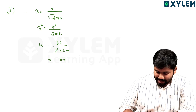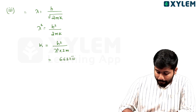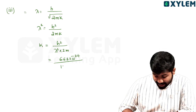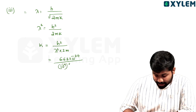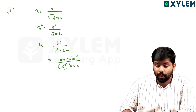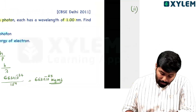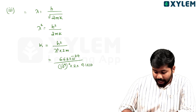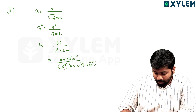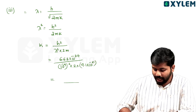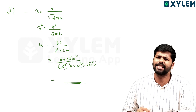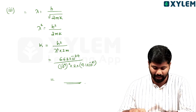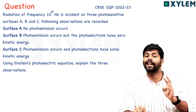Substituting: K = (6.63 × 10⁻³⁴)² divided by (10⁻⁹)² into 2 times mass of electron (9.1 × 10⁻³¹). Calculate this to get the final answer for kinetic energy of the electron. And we are moving to the second question.